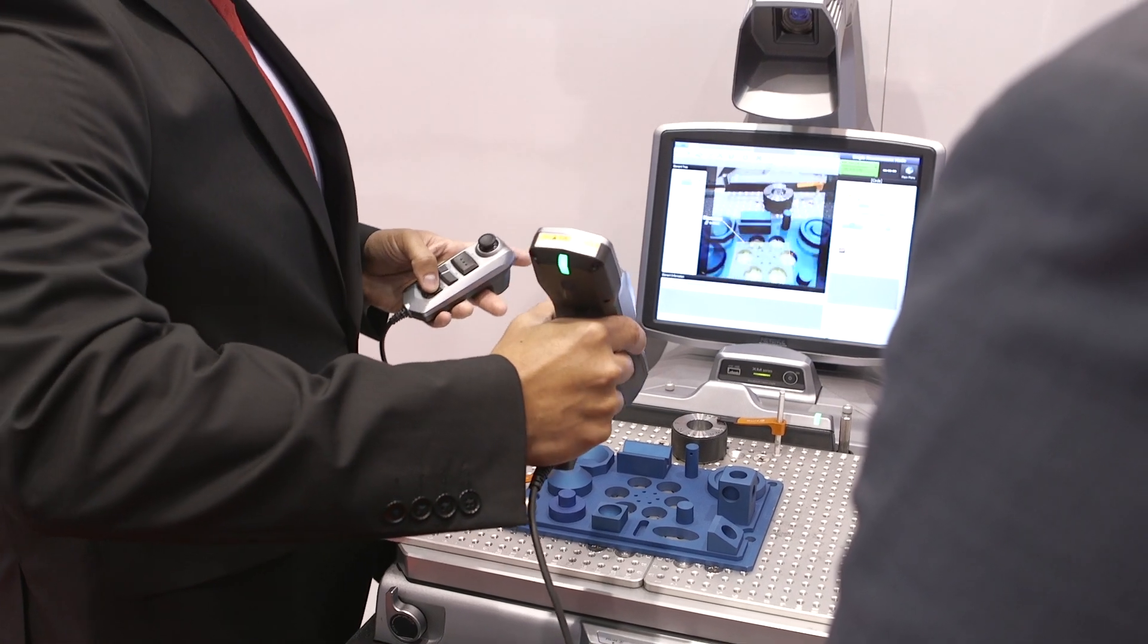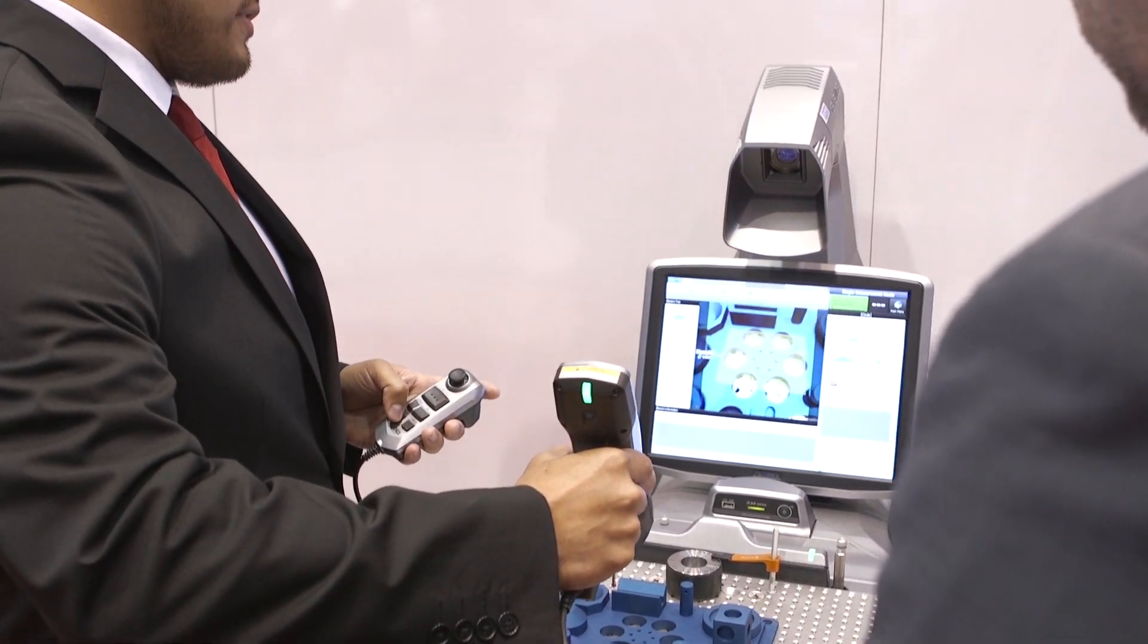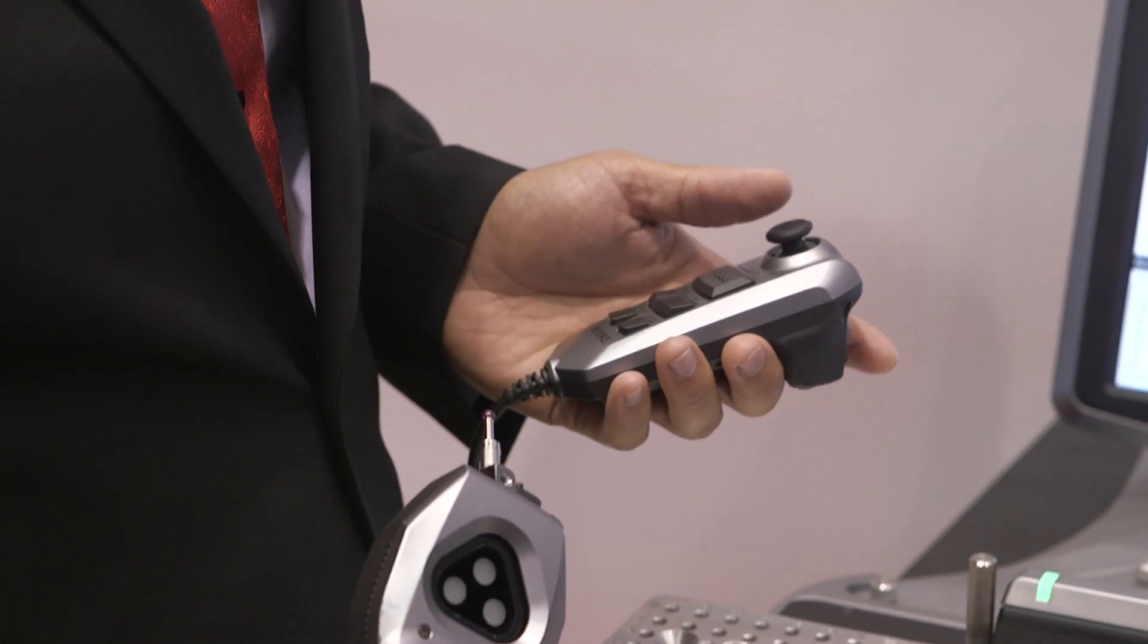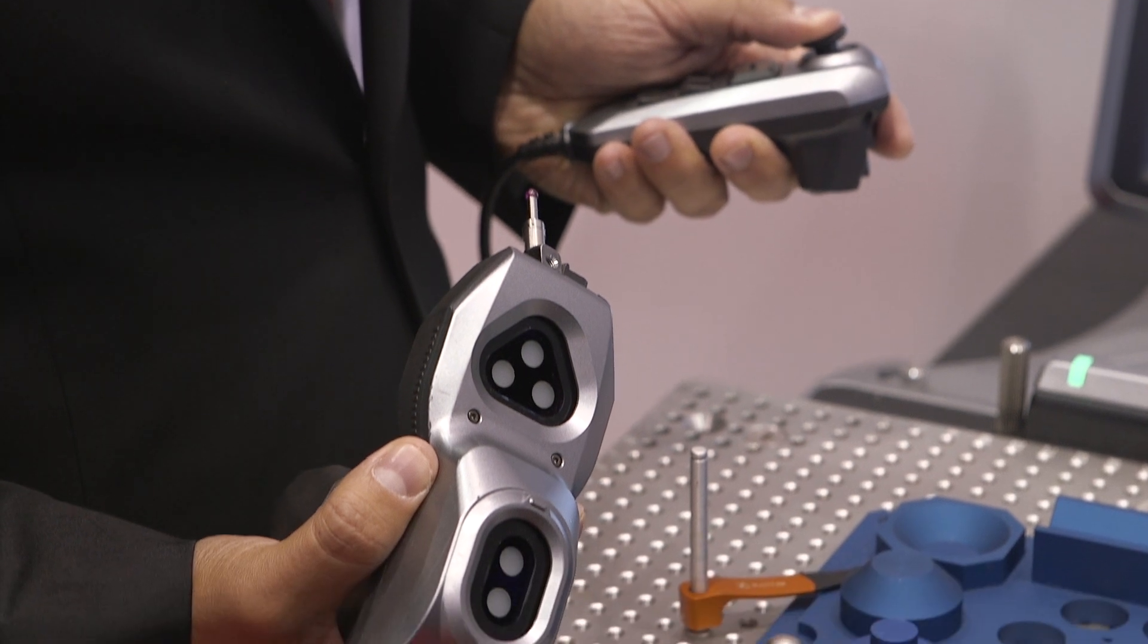And could you tell me a little bit about the handheld CMM system? The handheld CMM, while this unit is more meant for high volume, low mix, it's going to be the opposite for the handheld CMM. It's going to give you a lot of measurement capabilities for larger parts and 3D inspection while this one's more focused in the 2D realm.